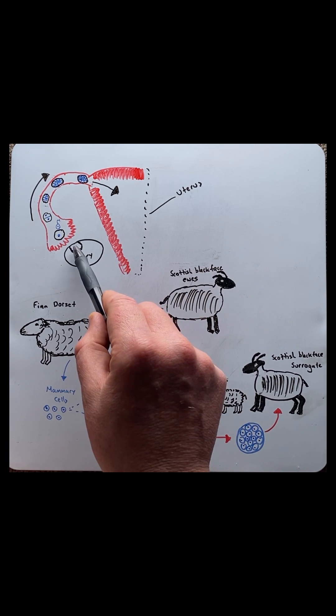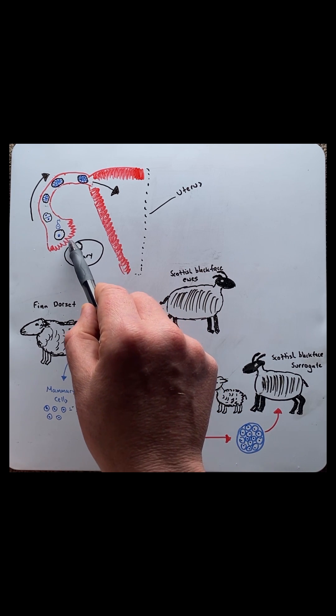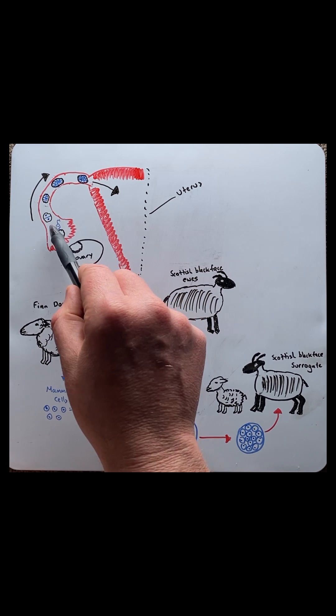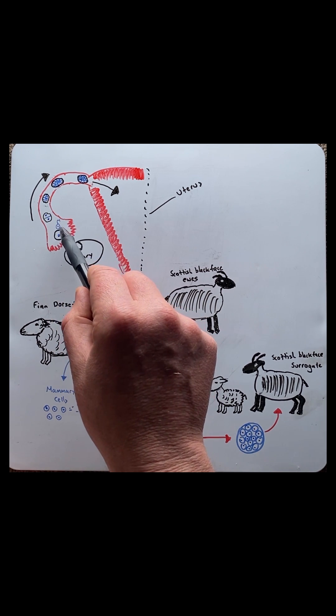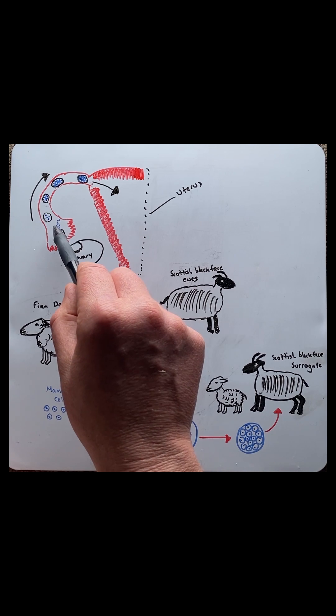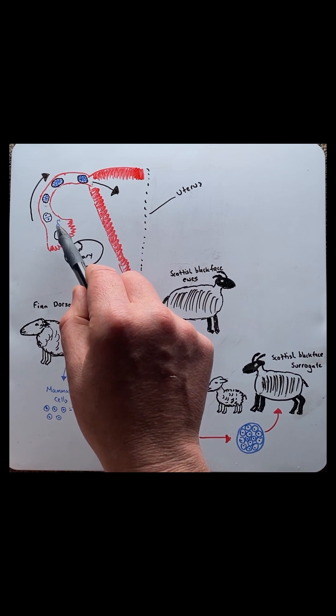At the ovary at day 14, we have the egg that's released from the ovary and then moves across into the fallopian tube. Here it meets a sperm cell which then fuses together and fertilizes the egg. This is the one cell embryo which we call a zygote.